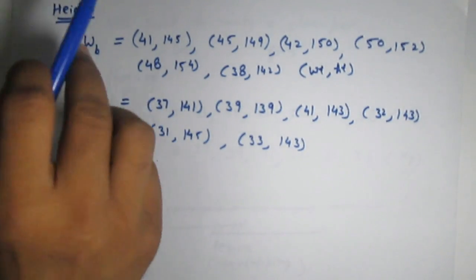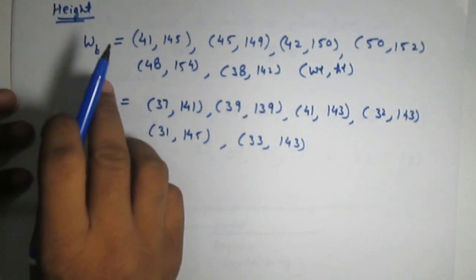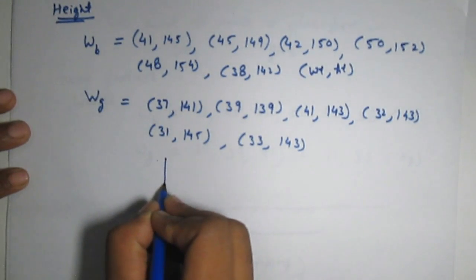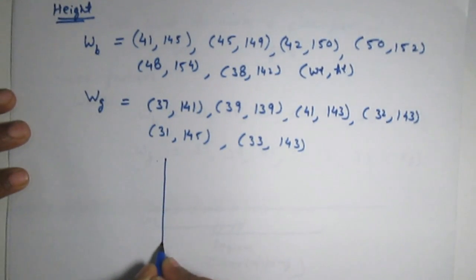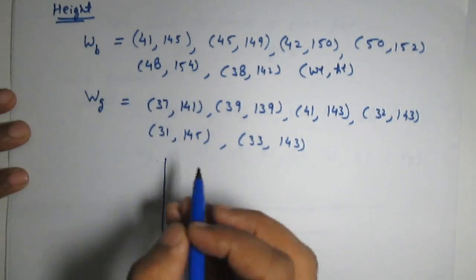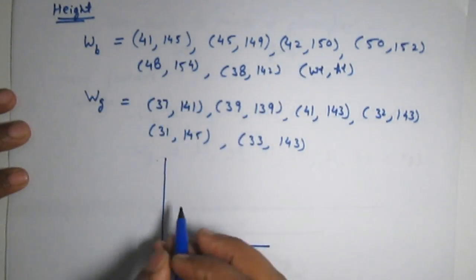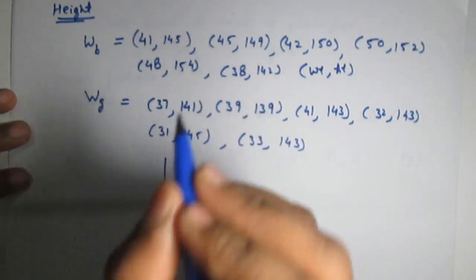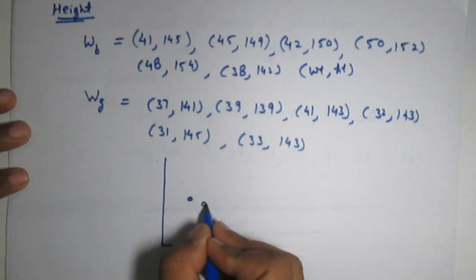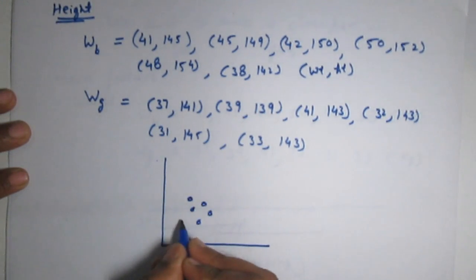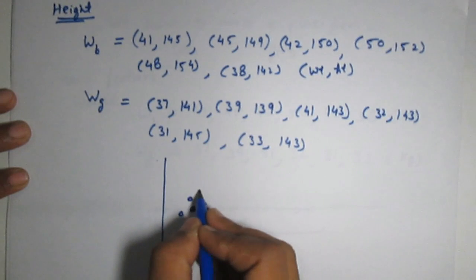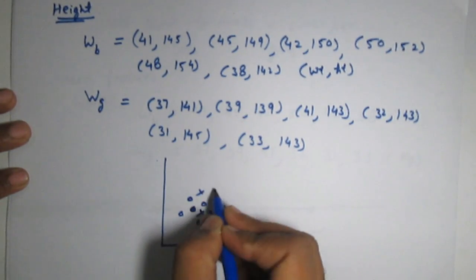Now we have to draw these points in a two-dimensional space because we have two numbers to represent one student. This is a 2D space, and if we draw all the students — for example, 41 and 145 — the circles are denoting girls (6 girls) and the crosses are denoting boys.